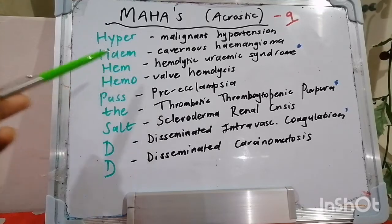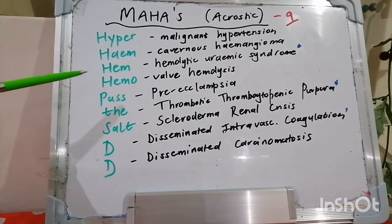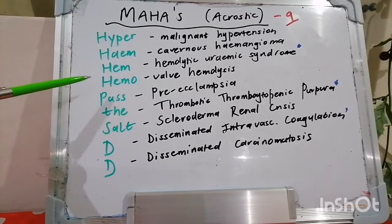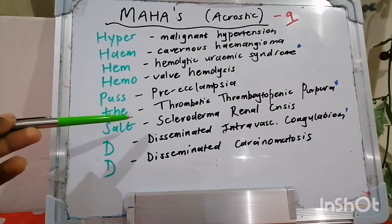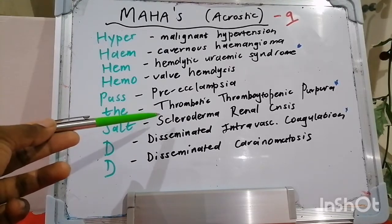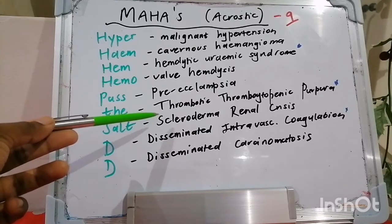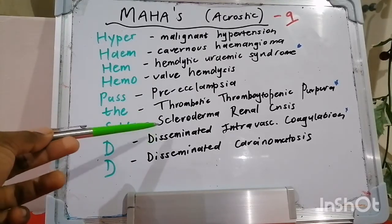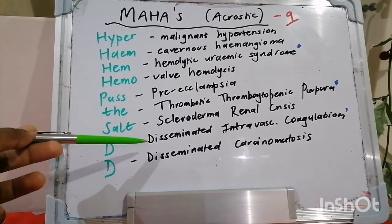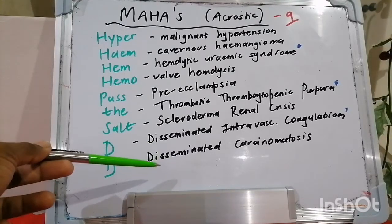HEME speaks to hemolytic uremic syndrome — we'll talk about that later. HEMO speaks to valve hemolysis, especially with artificial metallic valves. PASS speaks to severe preeclampsia. THE speaks to thrombotic thrombocytopenic purpura — TTP — which we'll also discuss further.